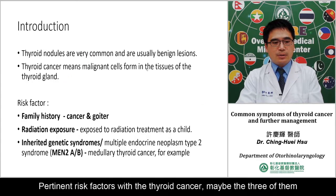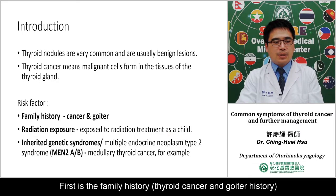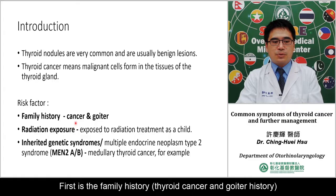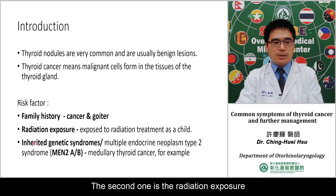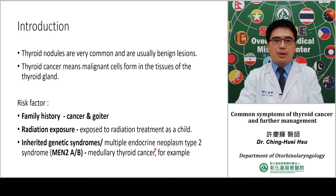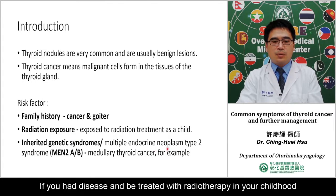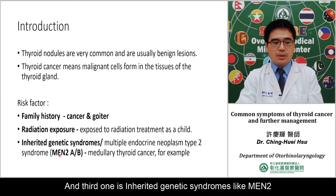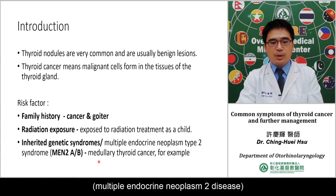The risk factors for thyroid cancer may be three. First is family history — family history of thyroid cancer and thyroid goiter. Second is radiation exposure: if you received radiation therapy in childhood, there is a higher possibility of getting thyroid cancer when you grow up. The third is inherited genetic syndromes like MEN2, which we call multiple endocrine neoplasia.